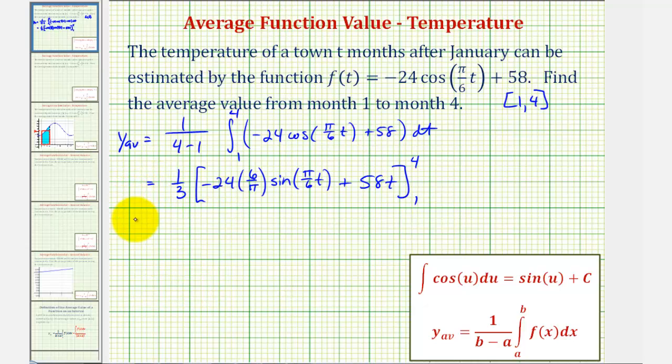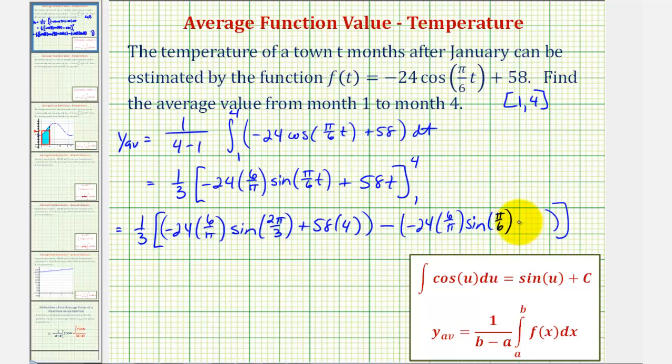This will get a little messy. We're going to have one-third times, when t equals four, we'd have negative 24 times six divided by pi sine pi over six times four, that'd be four pi over six, or two pi over three, and then we'd have plus 58 times four. All of this minus the value when t is one. So again, we'd have negative 24 times six divided by pi times sine just pi over six, and then plus 58 times one.